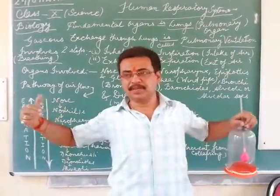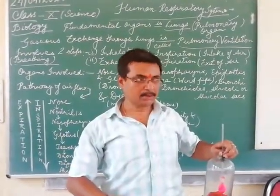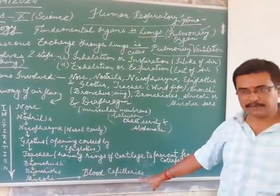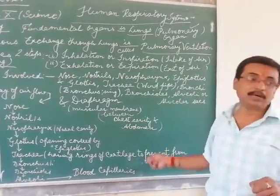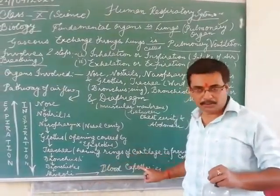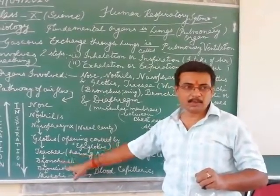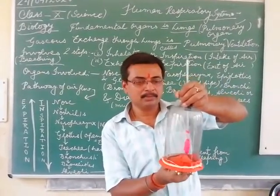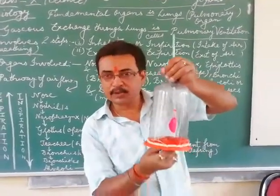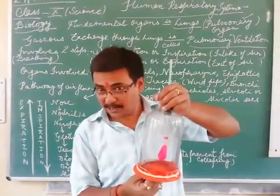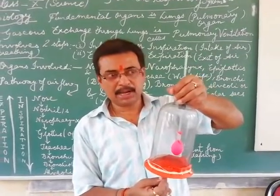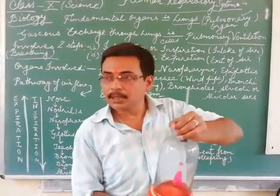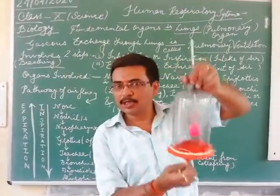So once again: diaphragm goes down, chest cavity expands — inhalation. Air containing O2 reaches the alveoli, and from alveoli to blood capillaries. After cellular respiration, the opposite takes place — CO2 moves from the capillary to the alveoli, to the bronchus, bronchioles, and comes to the nose. When I pull the diaphragm, the balloon inflates — inspiration. When I push the diaphragm up, the balloon or alveoli collapse — expiration.